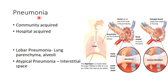Pneumonia is a lower respiratory tract infection referring to inflammation of the lungs by microorganisms. It can be classified as either community-acquired, where patients acquire organisms in the community, or hospital-acquired, where patients acquire organisms in the hospital setting. Based on clinical manifestation and the area of the lungs involved, pneumonia can be grouped into lobar pneumonia and atypical pneumonia. To understand this, let us look at the structure of the respiratory system.